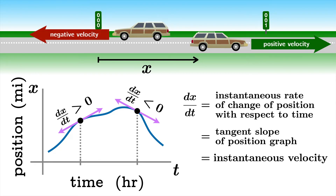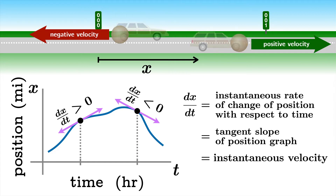We shouldn't really care whether the car is actually backing up or moving forward. We should rather imagine an idealized point particle car that has no front or back. When we talk about positive velocity we mean motion towards the right, and when we talk about negative velocity we mean motion towards the left.